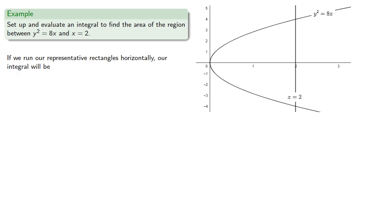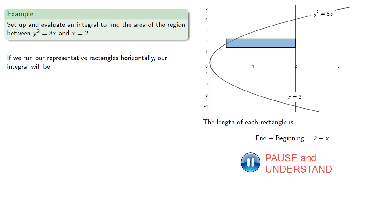If we run our representative rectangles horizontally, the length of each rectangle, end minus beginning, where our end is always at x equals 2, and our beginning is some x coordinate, and the height is some small portion of the y-axis dy. And so our integral will be...